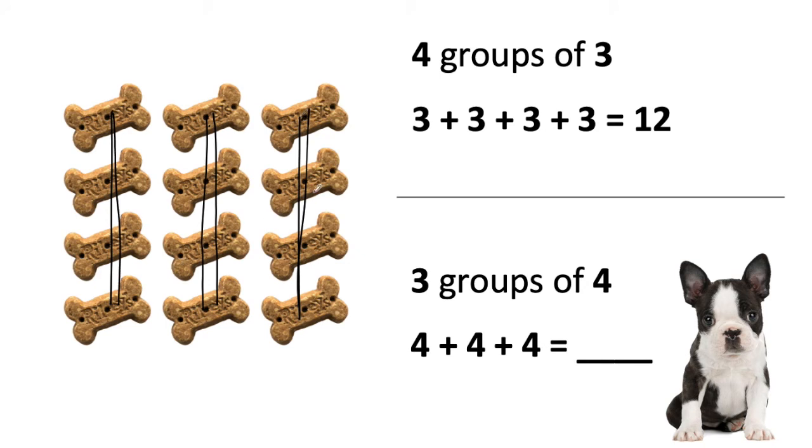Now I'm describing the same array. So I'm pretty sure that there's still 12 treats. I didn't take any treats away or I didn't add any treats. But let me add four plus four plus four to make sure there's 12.